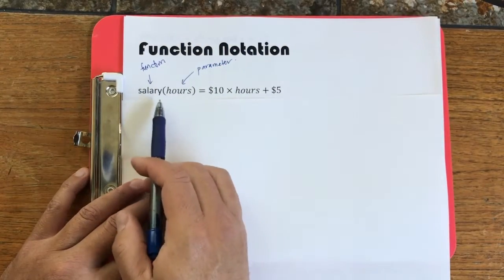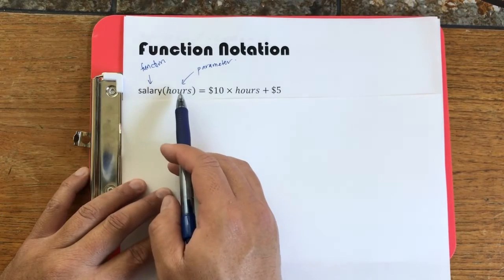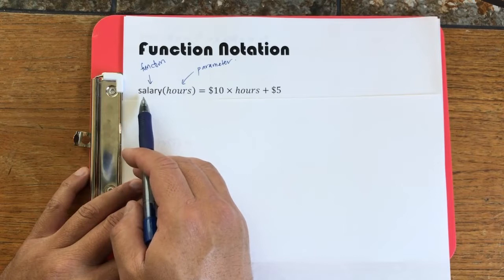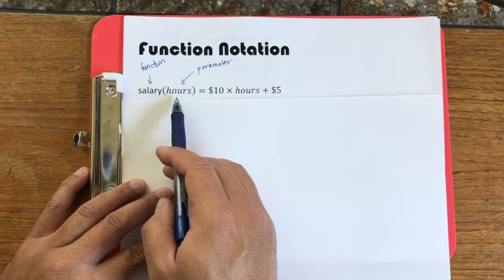So this right here is a function. It is not multiplication. This is not salary times hour. This says I will tell you what your salary is if you tell me how many hours you work.